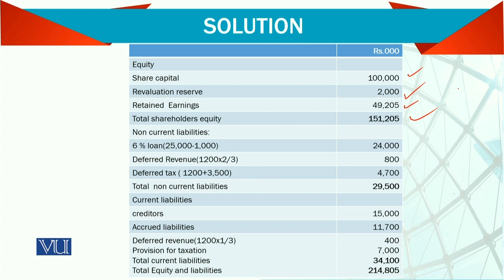Under non-current liabilities, we have a 6% loan. The 6% is the rate of interest charged. They have already given the finance charge in the trial balance, so we are not supposed to rework it. But if it is not mentioned in the trial balance, then you need to work out a provision for it. In this case it is already given, so we take it from there. Do remember here we reduce 1,000, which was taken to administrative expense, removing it from there.